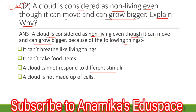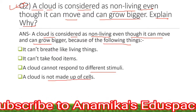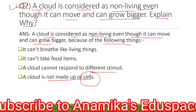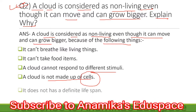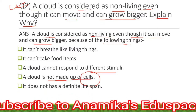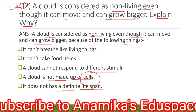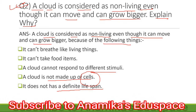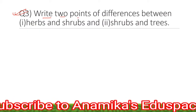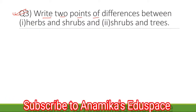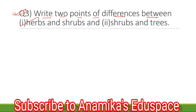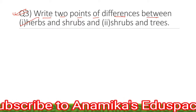Number 4: A cloud is not made up of cells. Number 5: It does not have a definite life span. Now write two points of differences between herbs and shrubs.